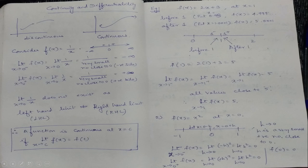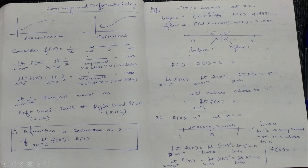f(x) = x² and the discussion is at x = 0. We are checking continuity at 0. On the number line, 0 is here, 1 is here, −1 is here. At 0, I find f(0) = 0² = 0. If the left-hand limit and right-hand limit are both equal to 0, then the function is going to be continuous. For the left-hand limit: limit as x→0⁻ of f(x) — the value just before 0.